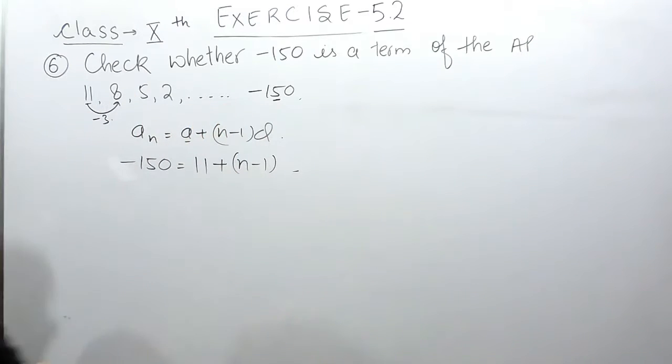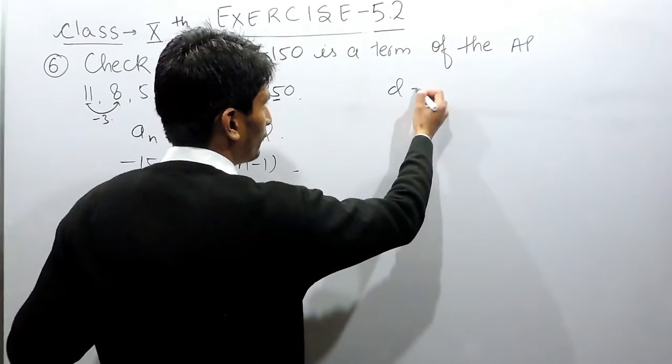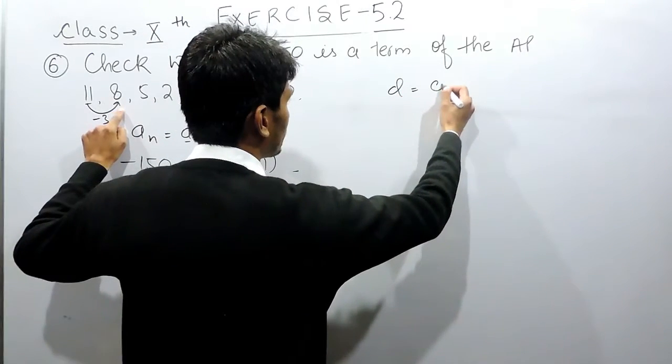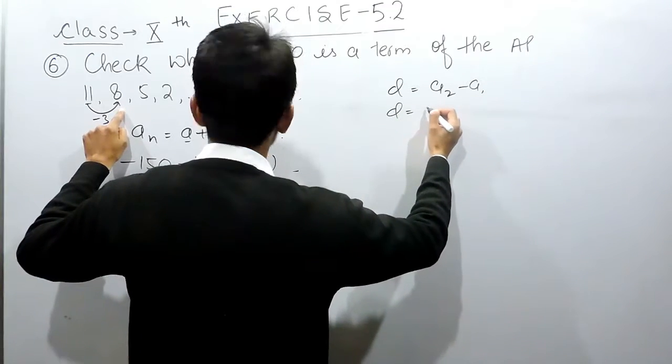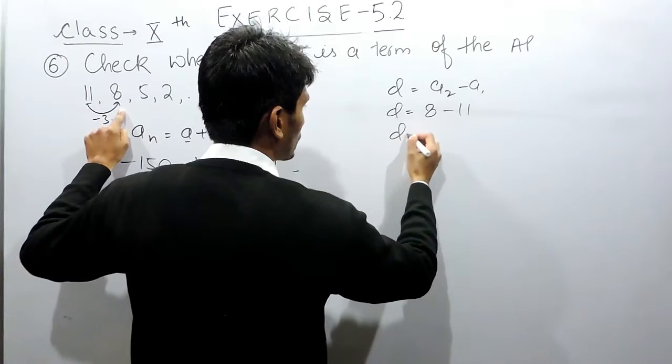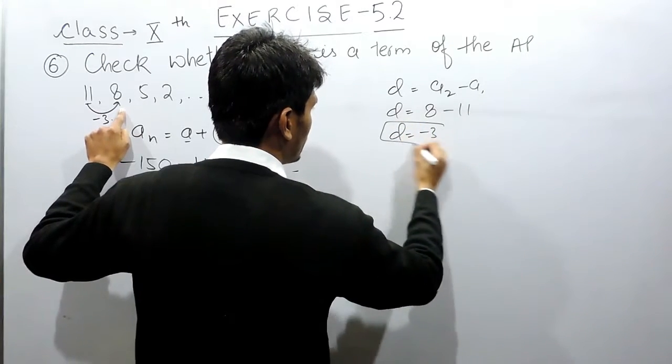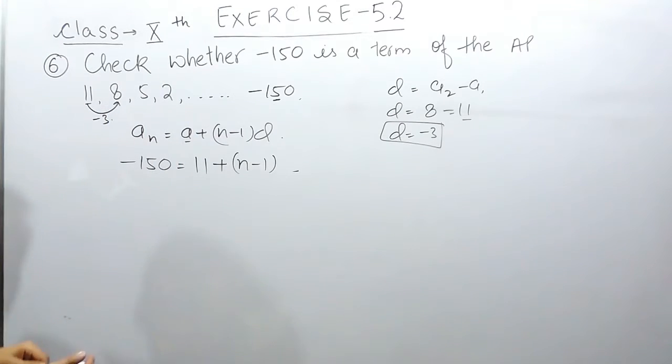So this is how a constant value, which is minus 3, is added to form this AP. Or in other words, the common difference can be formed by subtracting the first term from the second term. The second term is 8 and the first term is 11, so the common difference will be minus 3.